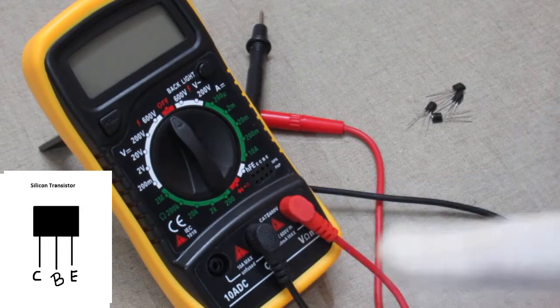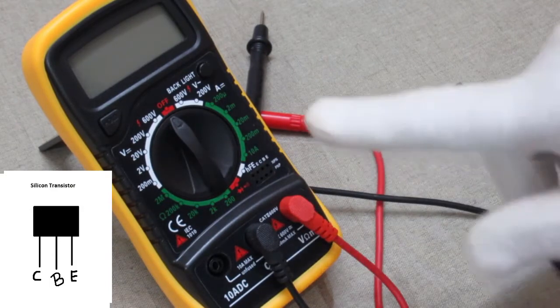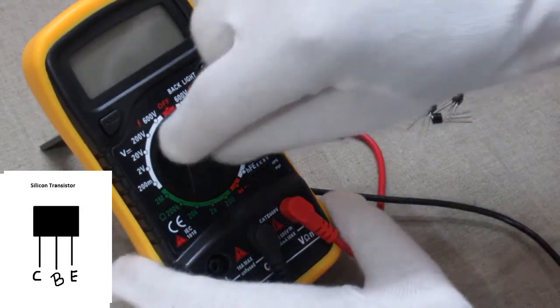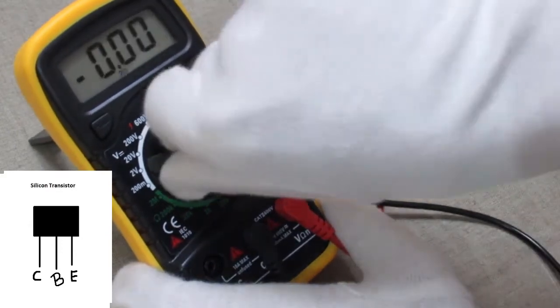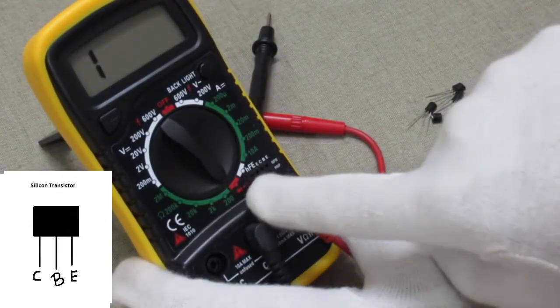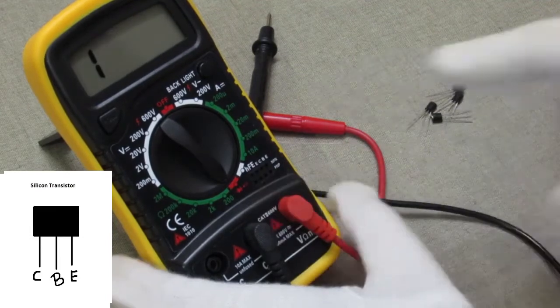Set the probes according to the showing as video and rotate the rotary switch on diode testing range.